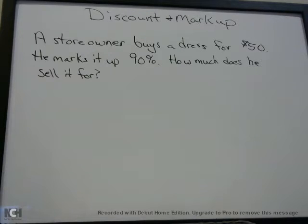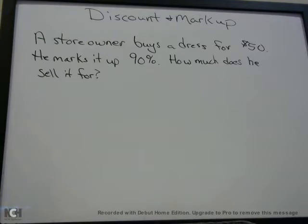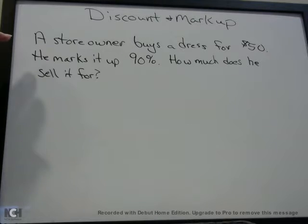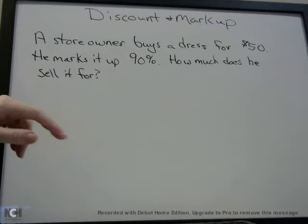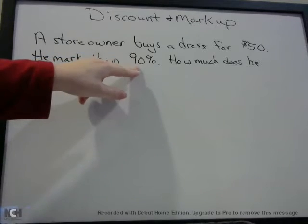Here's a question you might get: a store owner buys a dress for $50 and marks it up 90%. How much does he sell it for? Normally stores buy merchandise and then mark it up so that they can make a profit off of it when they sell it. So he buys it for $50 and marks it up 90%.